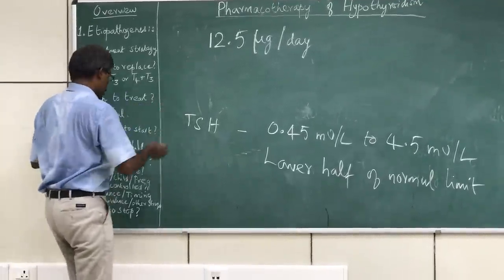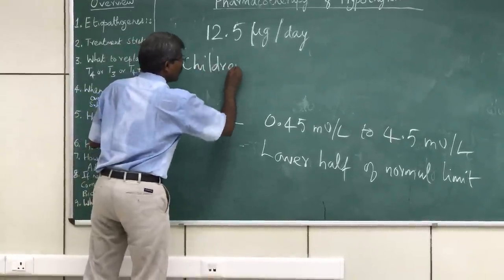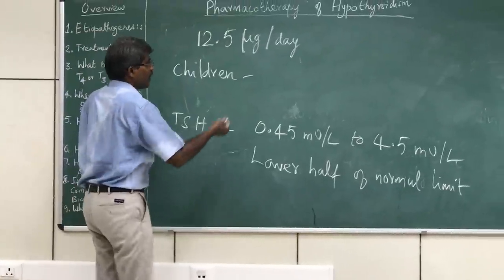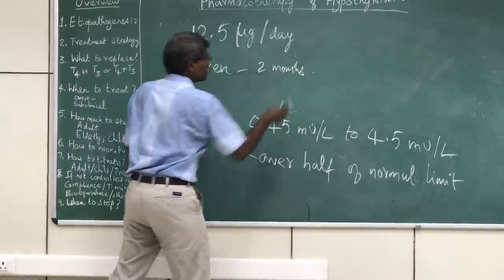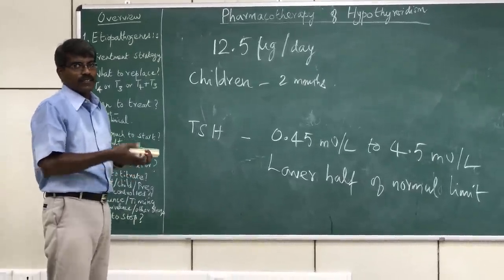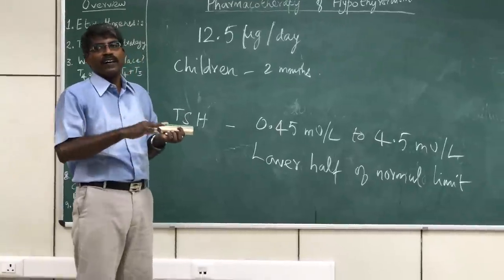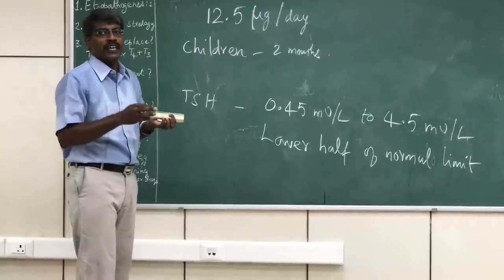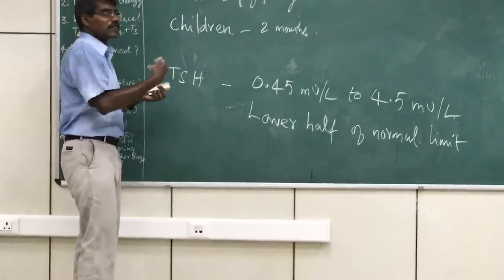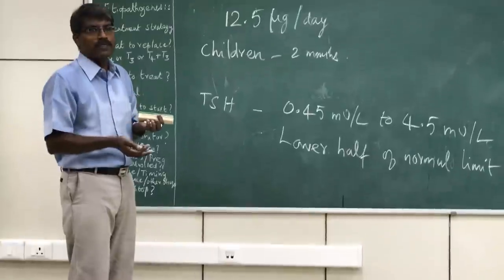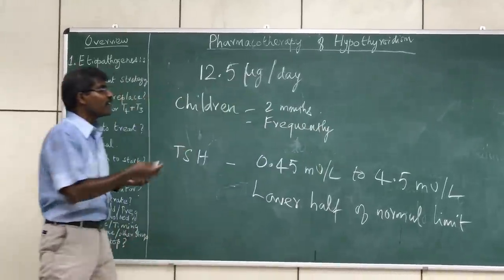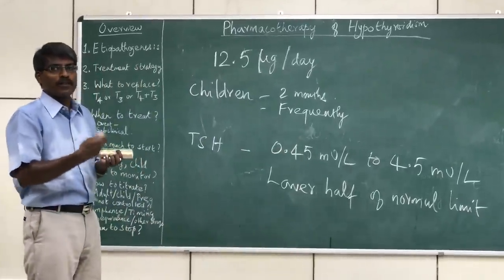For adults, once TSH is stable, check every 6 months for the first year, then annually. For children, however, because they have a fast growth rate and changing hormone requirements, monitoring must be done more frequently — even around every 2 months. The 6-monthly schedule used in adults is not applicable to children, as they are in a growing stage.